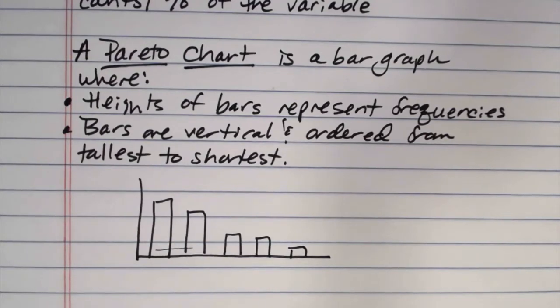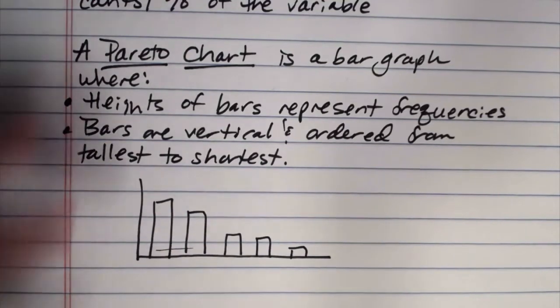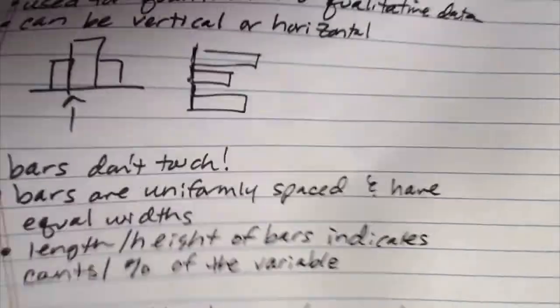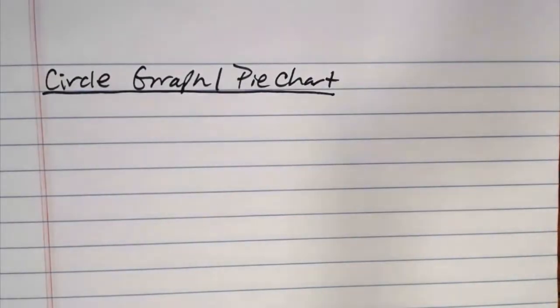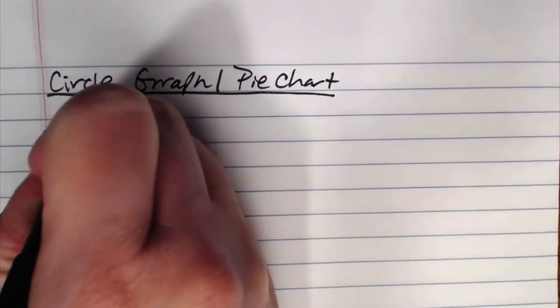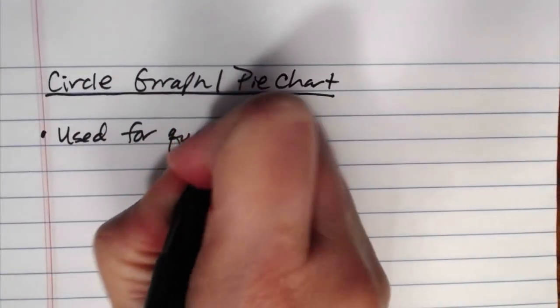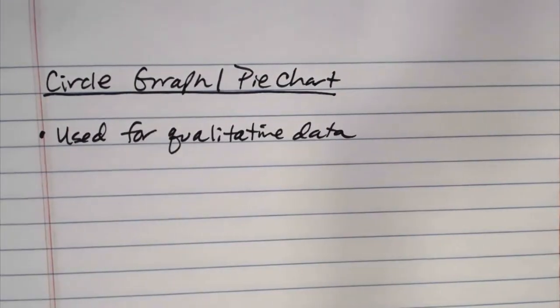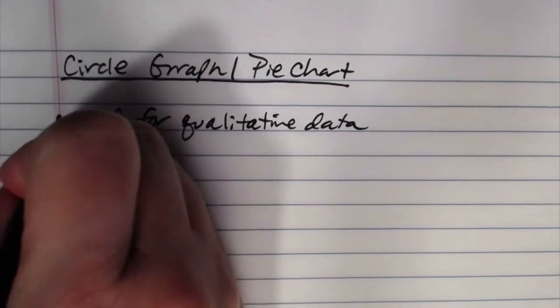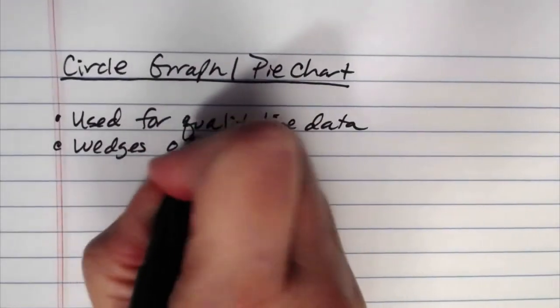The next type of graph that is discussed is the circle graph or the pie chart. They can go by either name. And I'm confident that you've probably all seen these before. Circle graph or pie chart. Circle graphs or pie charts are used for qualitative data only. They are not used for quantitative data.